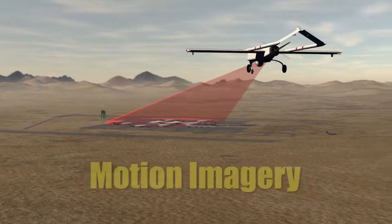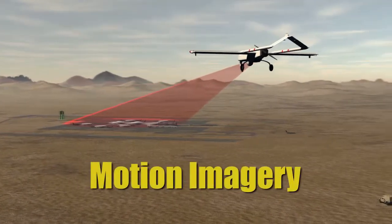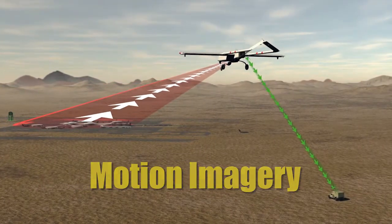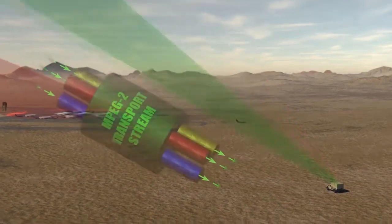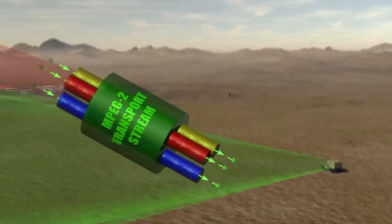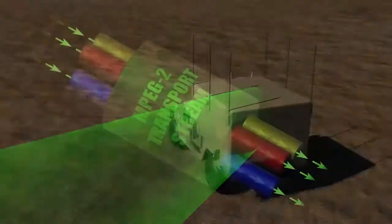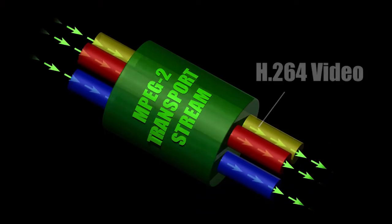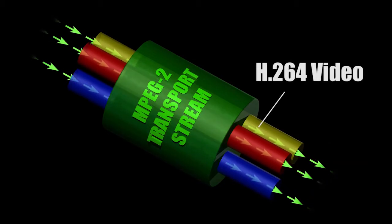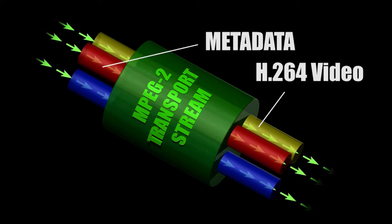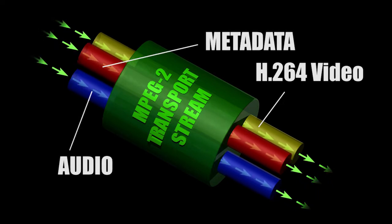As an unmanned aircraft collects motion imagery data, the data is multiplexed and transmitted in an MPEG-2 transport stream to the ground station. The transport stream comprises an H.264 video stream, one or more metadata streams, and an optional audio stream.